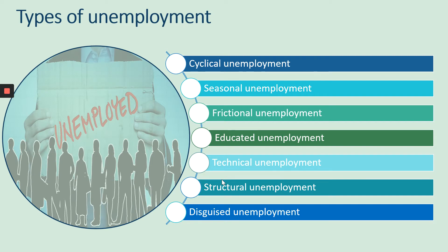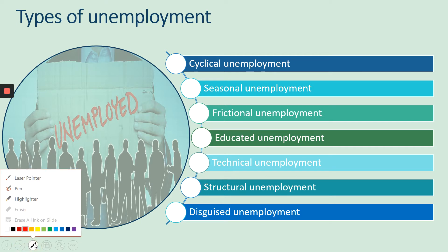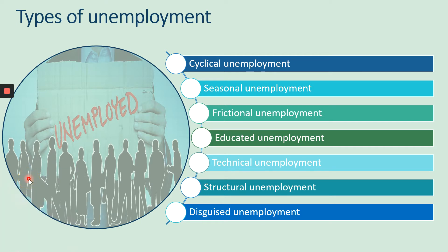The following are the types of unemployment: cyclical unemployment, seasonal unemployment, frictional unemployment, educated unemployment, technical unemployment, structural unemployment, and disguised unemployment. These are the seven types of unemployment.